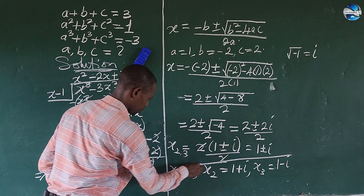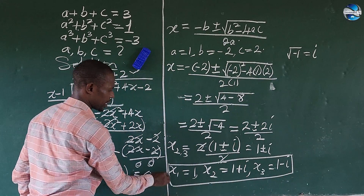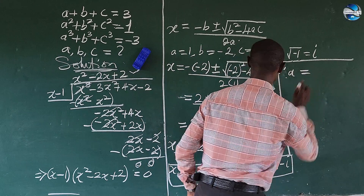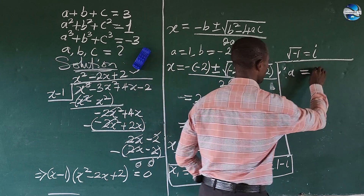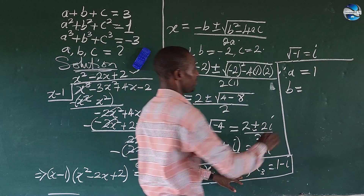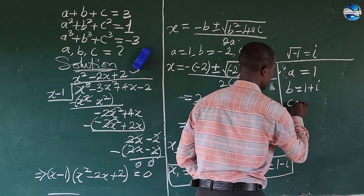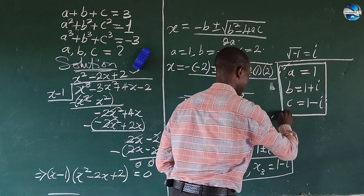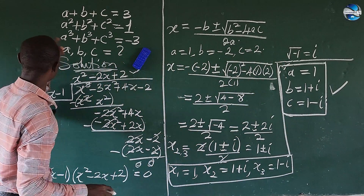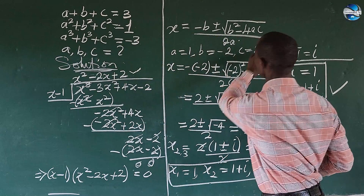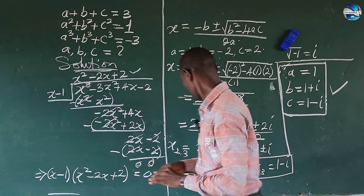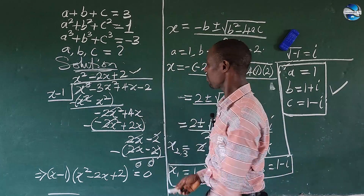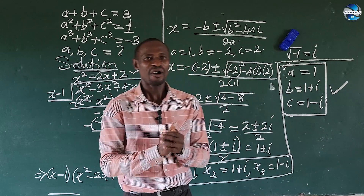So these are the three roots of x, which are also the values of a, b, c. Therefore: a equals 1, b equals 1 plus i, and c equals 1 minus i. These are the values of a, b, c that satisfy all three original expressions. I've gone ahead to substitute these values and they all satisfy the equations. This marks the end of this tough algebraic challenge.